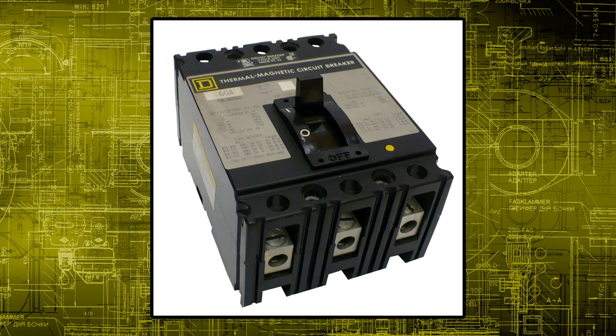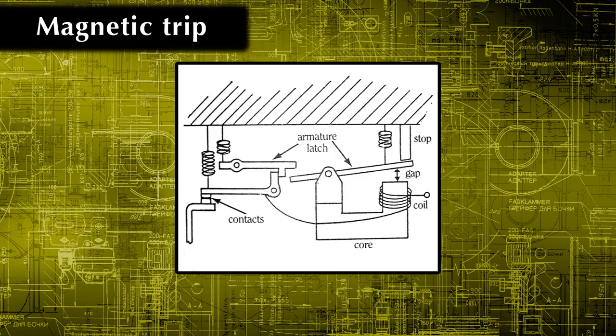It has two tripping mechanisms which are magnetic trip and thermal trip. Magnetic trip deals with short circuits. It consists of an iron core with a wire wrapped around it. Load current flows in the wire and thus generates a magnetic field. When short circuit current occurs, this magnetic field becomes powerful and will attract a nearby armature which in turn trips the circuit.